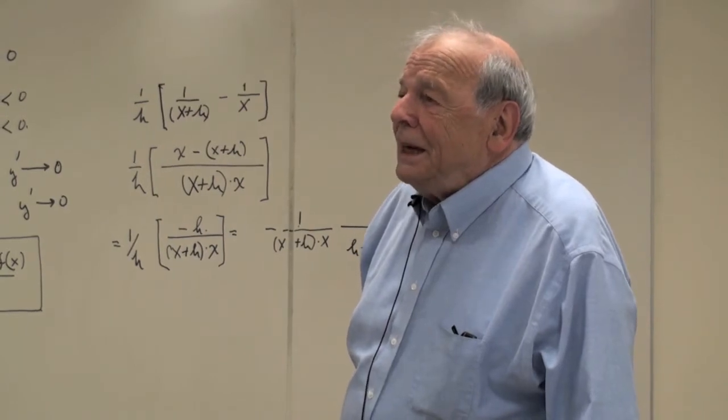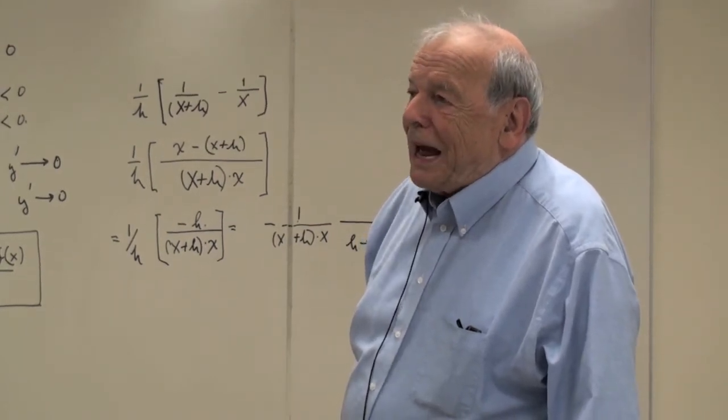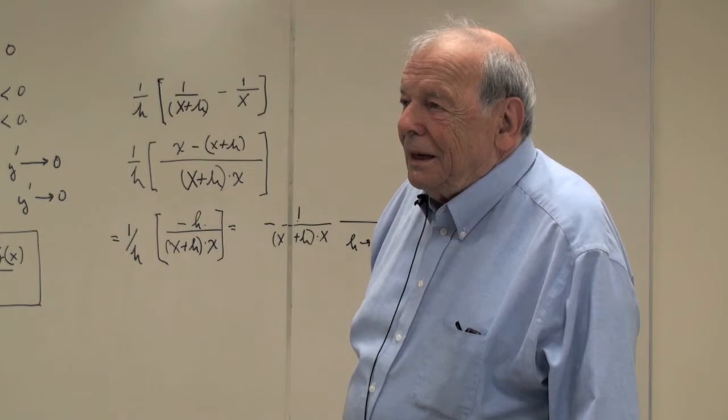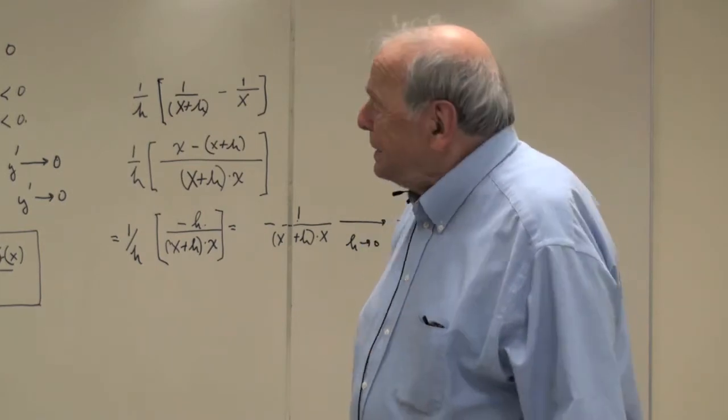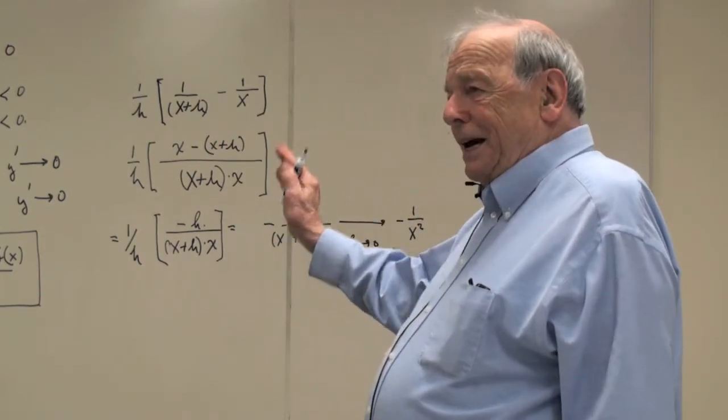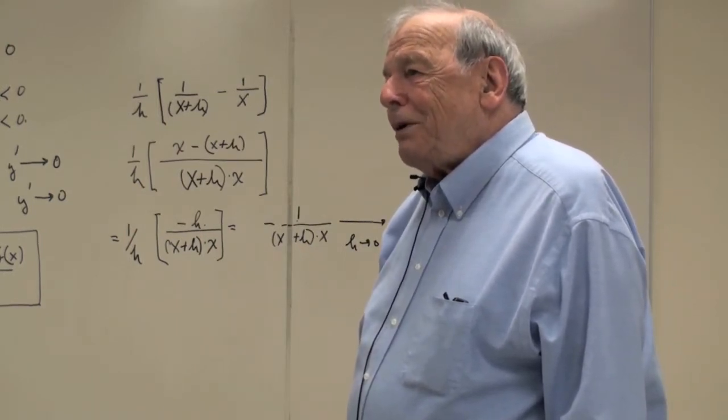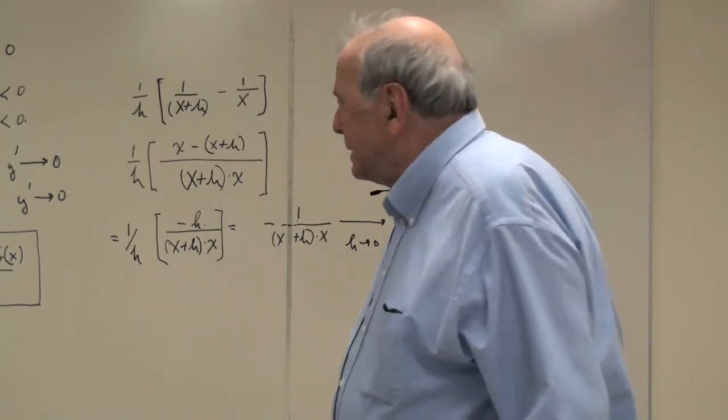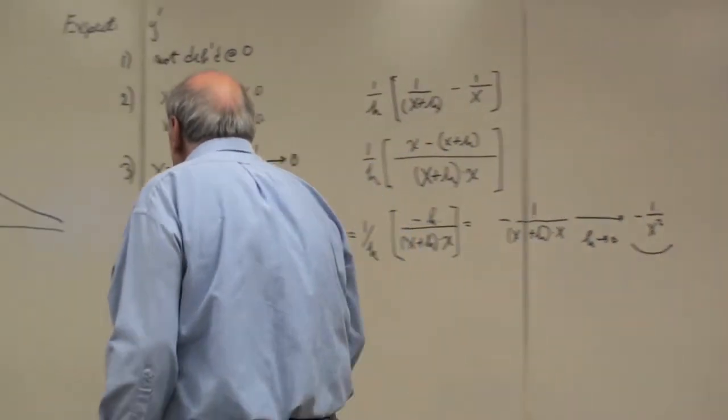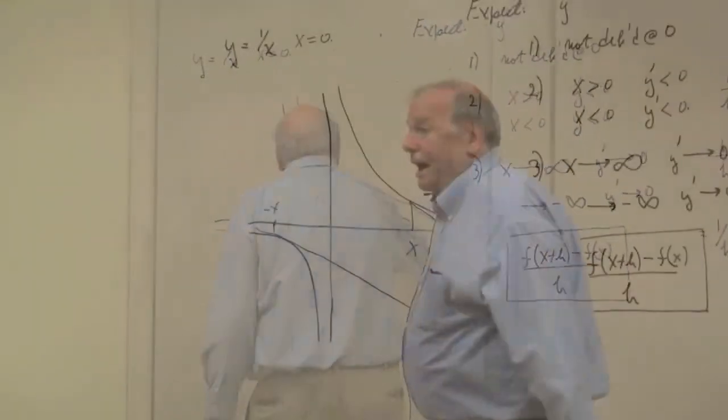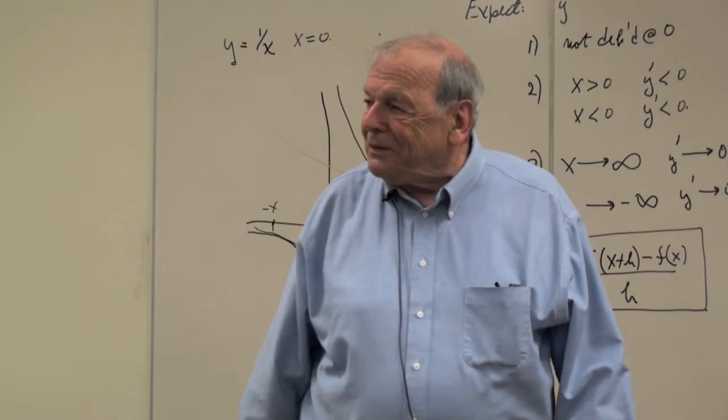Well, if you replace x by minus x, what happens to that? It stays the same. So this thing is the same at x and at minus x, which means that it's symmetrical around the y-axis. And is that reasonable? I haven't proved it, but it does seem pretty reasonable, doesn't it?